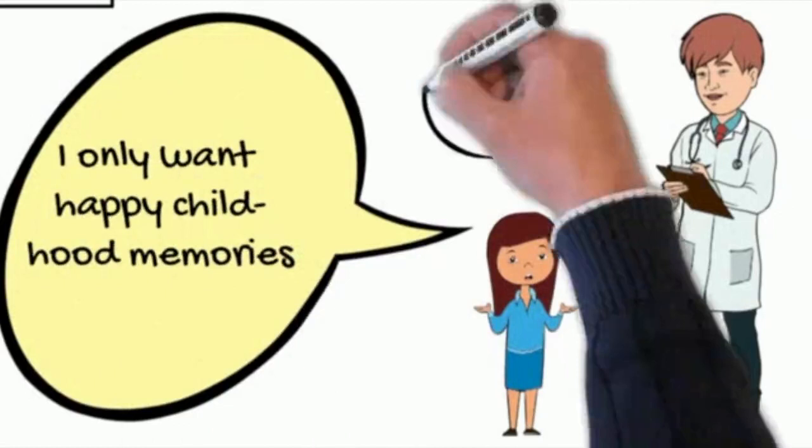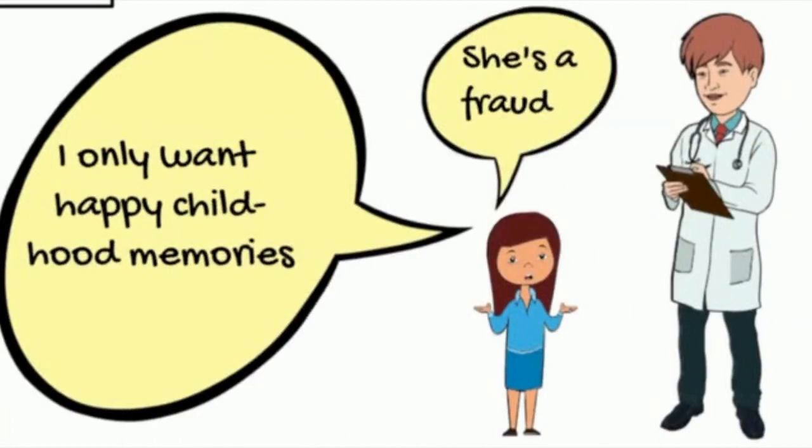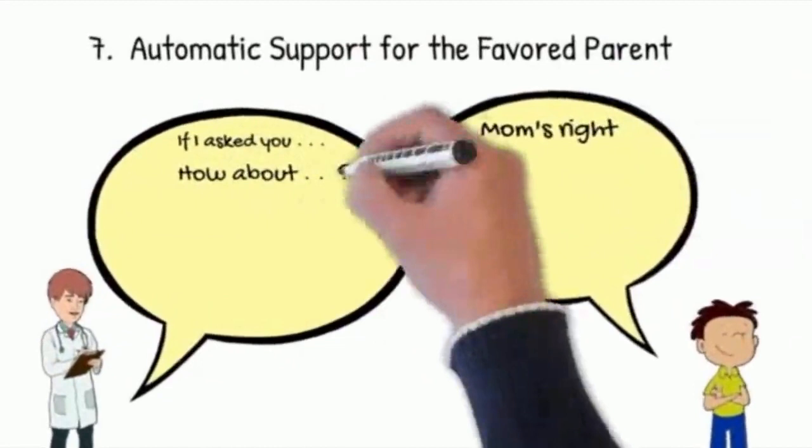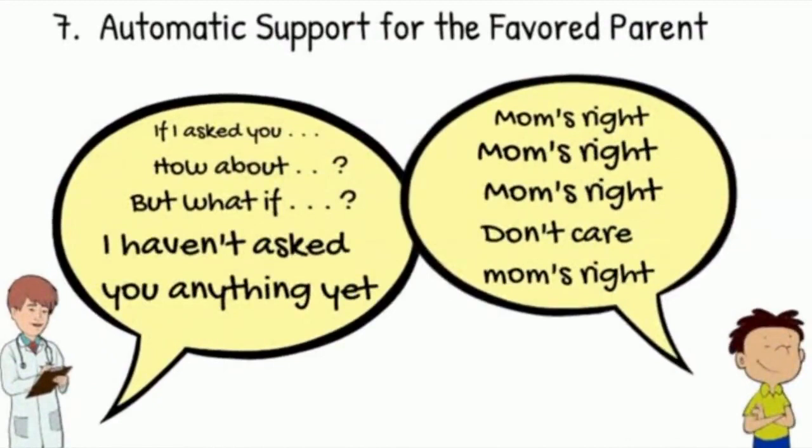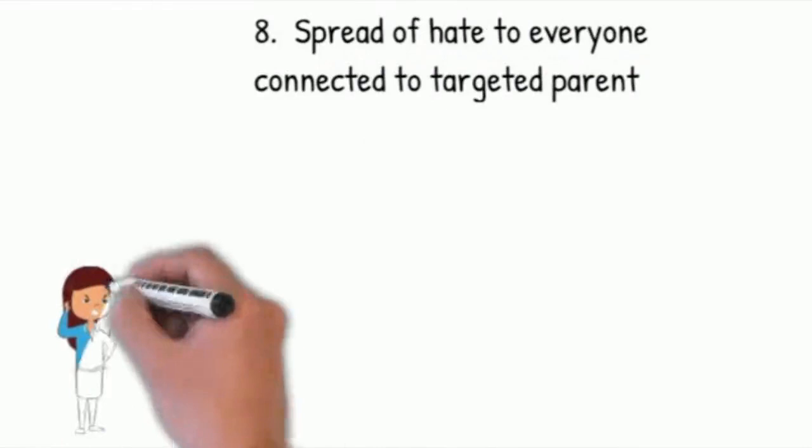Behavior seven, reflexive automatic support for the favored parent. The kids will take the favored parent side in every internal conflict. The favored parent is always right. Behavior eight, the spread of animosity to friends, family, and anyone related to the targeted parent. Anyone who has anything good to say about the targeted parent is cut off.